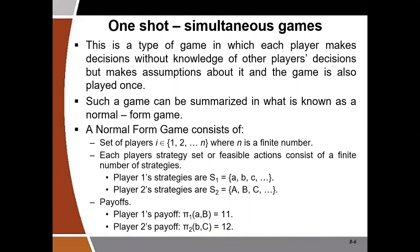A normal-form game is simply a summary of a simultaneous game in a table. In a normal-form game, we should see the number of players, the strategy of each player, and the payoff of each player in that table. Let's look at an example of a one-shot simultaneous game represented in normal form.